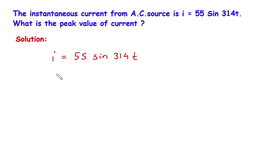The general equation for instantaneous current is i equals Im sin ωt, where this Im is the maximum current or peak current.